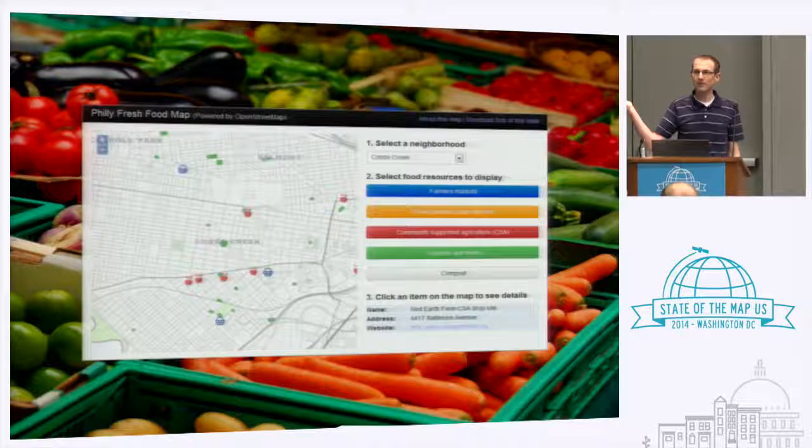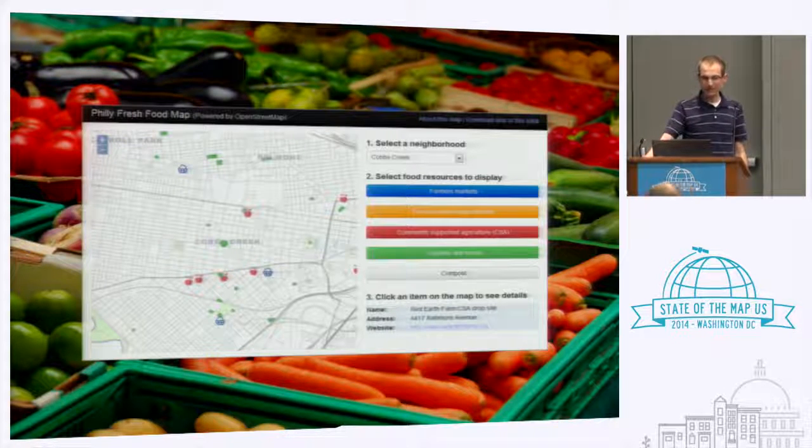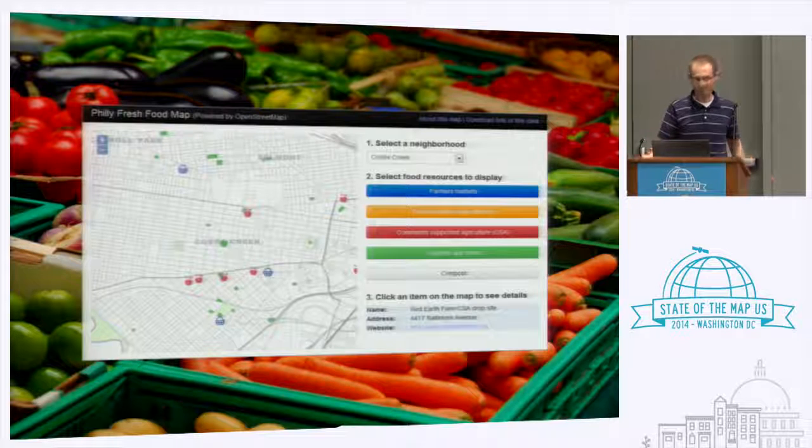My name is Sterling Quinn. I'm a doctoral student in geography at the Pennsylvania State University, or Penn State. I'm also an instructor in the Master of GIS program there, and formerly I worked for Esri as a software engineer. However, I am somewhat new to OpenStreetMap. If you go back one year ago, I had not ever edited the map. So this talk really describes a process, a journey, and a project that's sort of in its infancy.